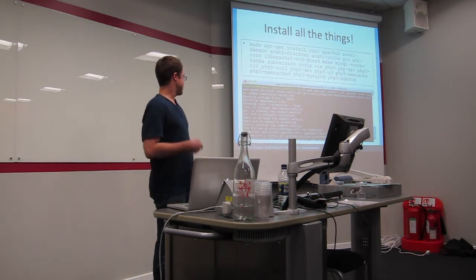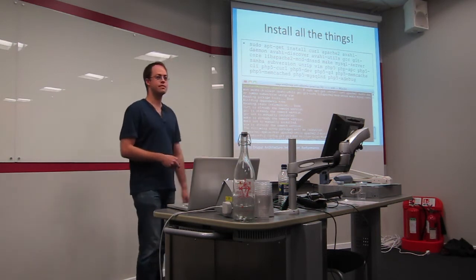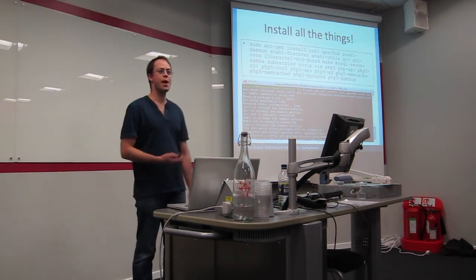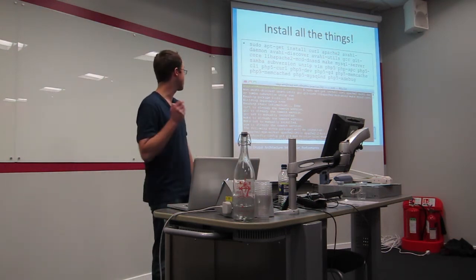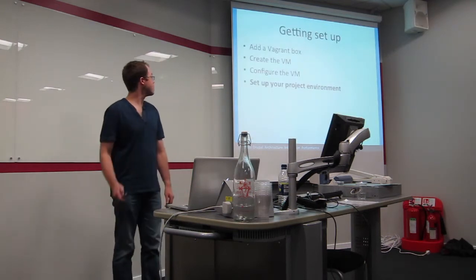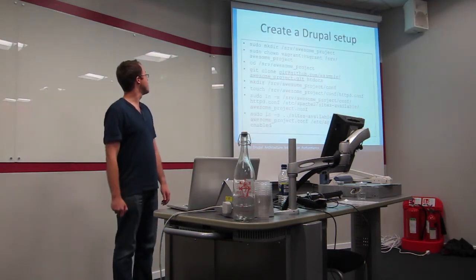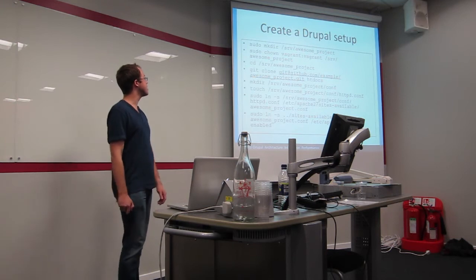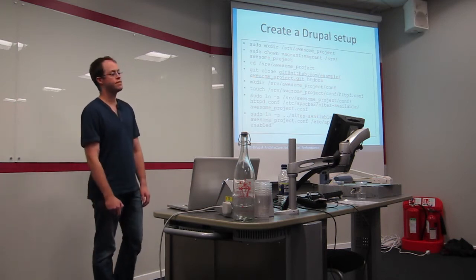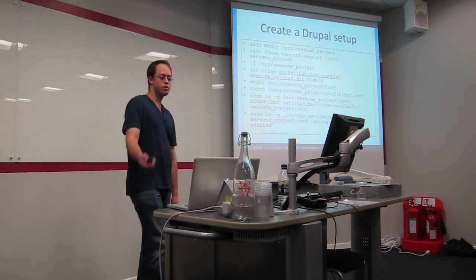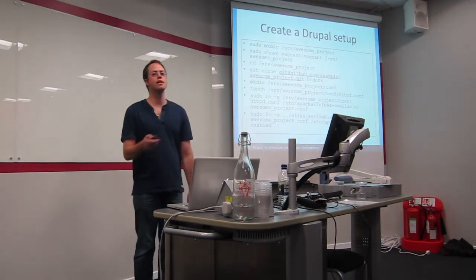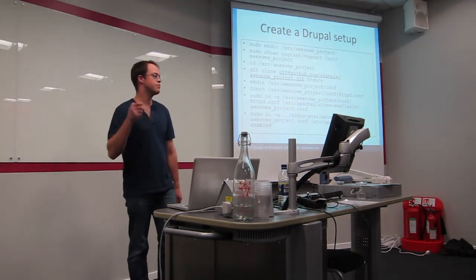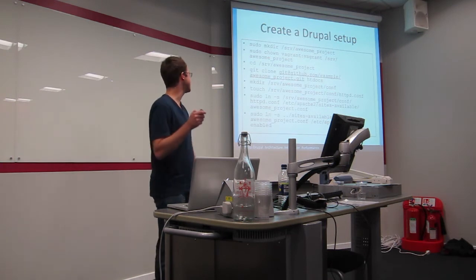You then type Vagrant up, and what that does, it starts going through it says importing base box, matching that, blah, blah, blah. What it's doing is setting up a virtual machine for you. Once you've done that, you can set up your project environment. So you might SSH to the machine, and you get a shortcut. If you're within the Vagrant directory and you type Vagrant SSH, that will automatically get you into the virtual machine you've just created. You don't need any SSH keys, you don't need a user ID. That will put you straight in.